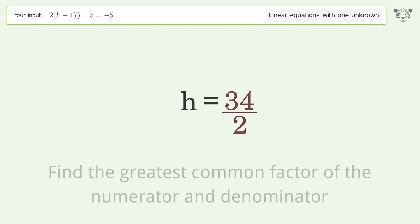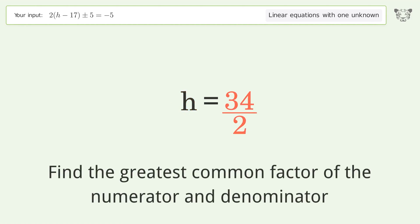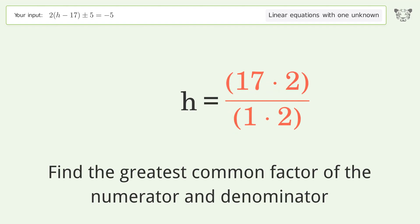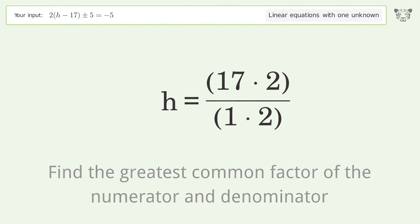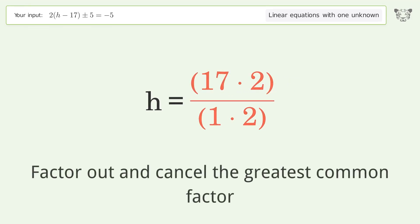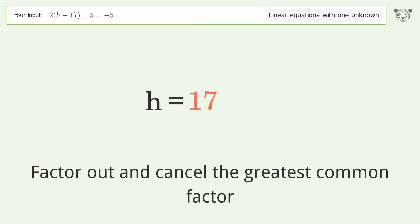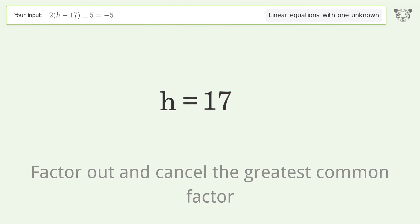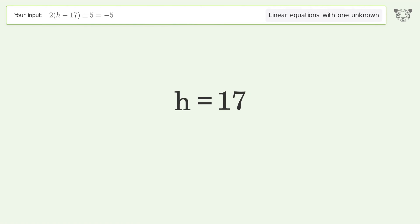Find the greatest common factor of the numerator and denominator. Factor out and cancel the greatest common factor. And so the final result is h equals 17.